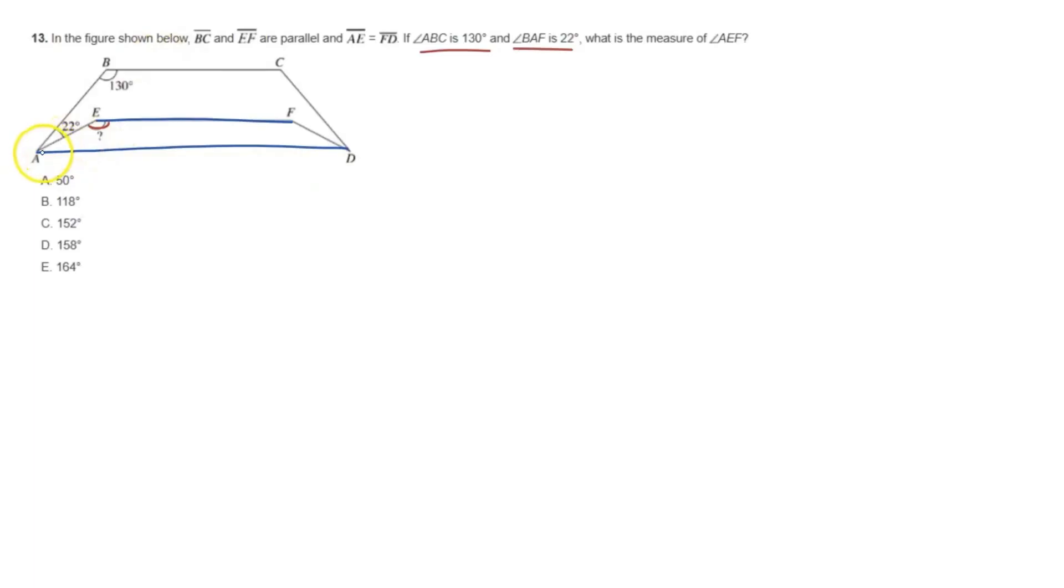And it's interesting because you see AE, that is basically a transversal that cuts in between these two parallel lines of EF and AD. Now why is that important? Well, because we know that it's going to create two angles. These two angles right here, what do they mean? Well, these are same side interior angles.